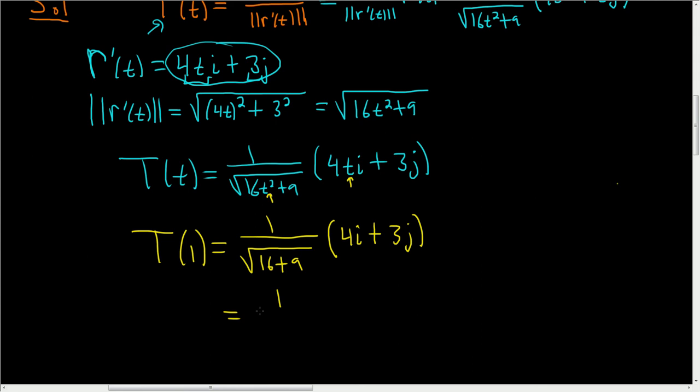This is 1 over... let's see, 16 plus 9 is 25, and the square root of 25 is 5. So this is 1/5 times (4i plus 3j).